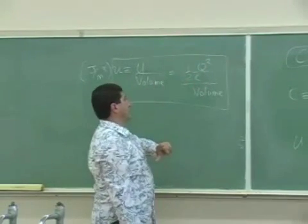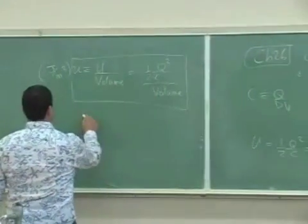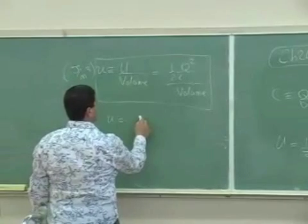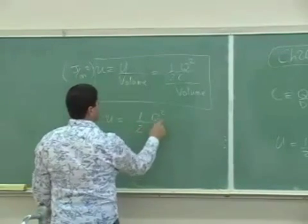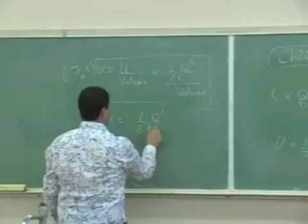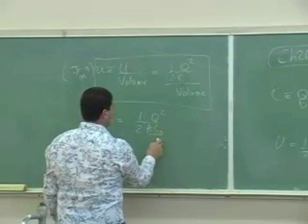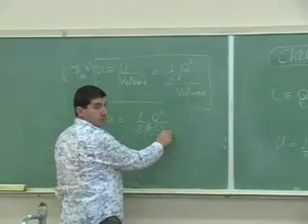The other way I can do is I could put the formula for the equation for the C that we got. We can get the half Q squared, and then what's the C equal to? The C is ε₀A over D, and then also we have the volume here, right?